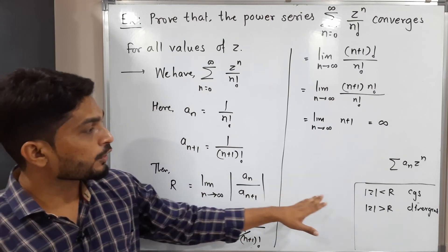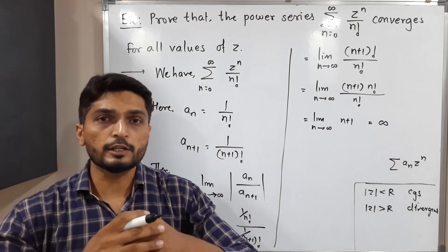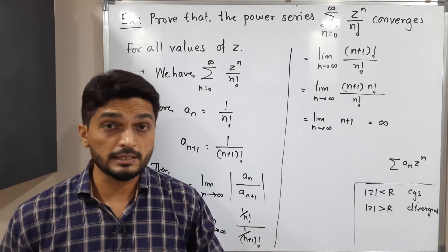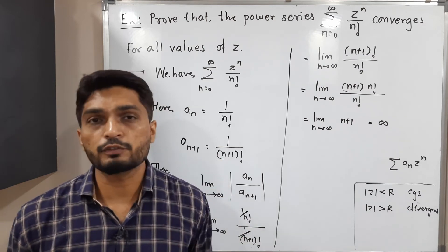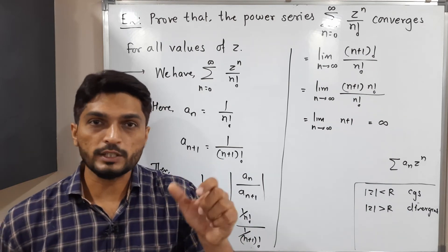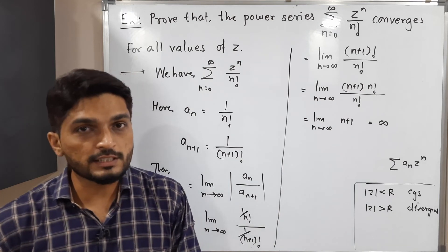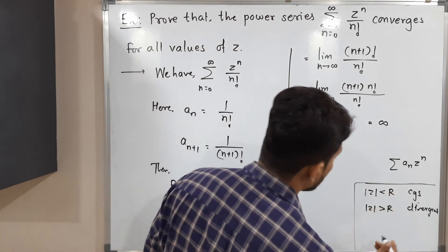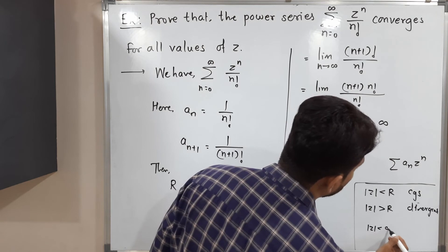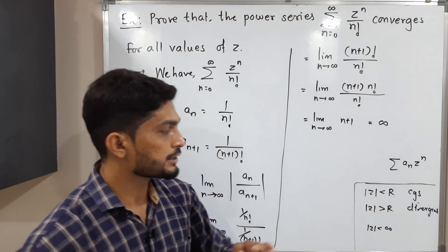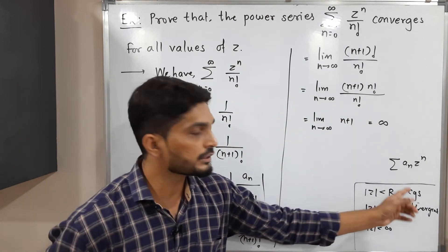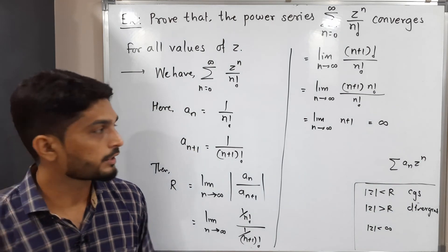See, radius of convergence is infinite. That means for any value of z if you select, obviously its mod is less than infinity. So it will be a convergent series since radius of convergence is infinite. So if mod z is less than infinity, then it converges.